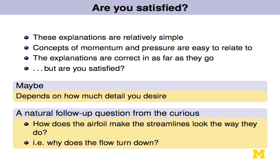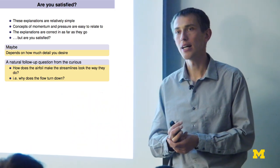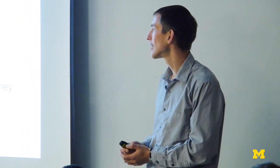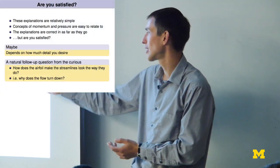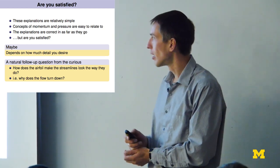Are you satisfied? These are relatively simple explanations. The concepts are easy to relate to, especially with some engineering background. They are correct as far as they go. Most non-engineers will be satisfied — something like, if you stick your hand out a car window and turn it slightly downward, you feel your hand go up. That's kind of what a wing is doing. But curious people usually ask follow-up questions: how does the airfoil make the streamlines look the way they do? Why does the flow actually turn down instead of going straight?